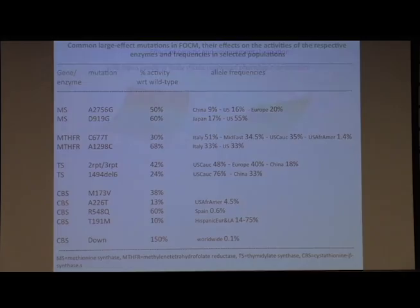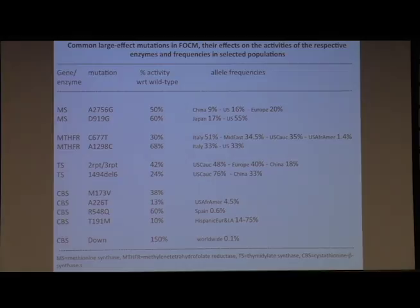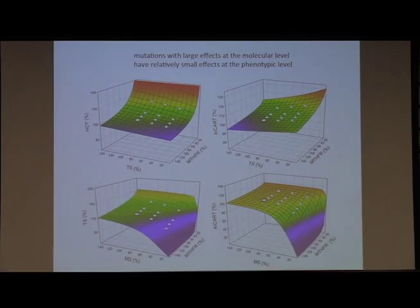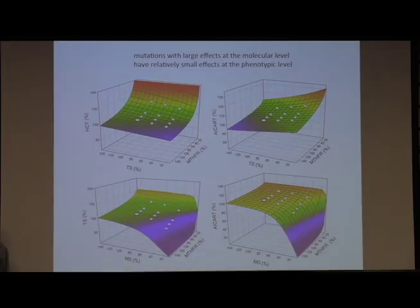Going back briefly to the table — I showed you what the effects of these mutations are on these various enzymes. Once we have that, we can actually plot those mutations on these landscapes. You can see that most of those mutations fall in the relatively flat regions of the landscape, where variation in these genes has no effect on the phenotype. So these are buffered against genetic variation at the steady state, just as the steady state is buffered against dynamic variation with meals.